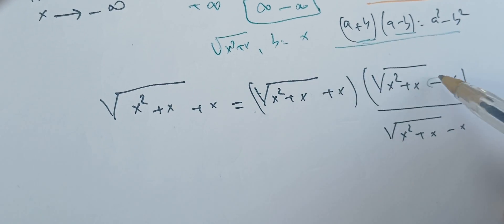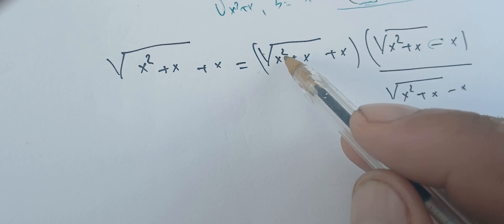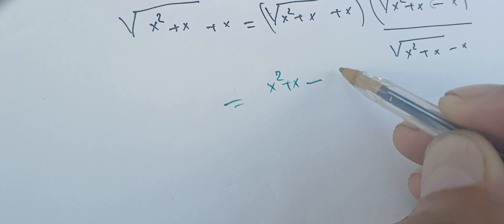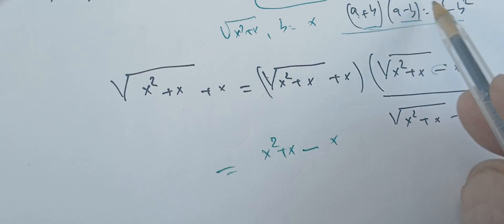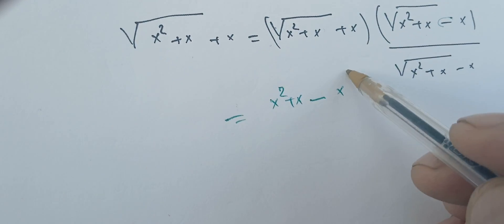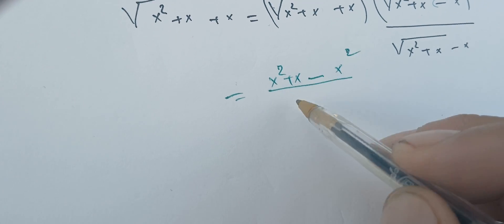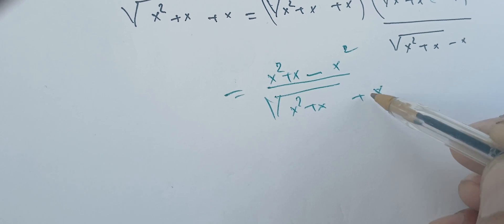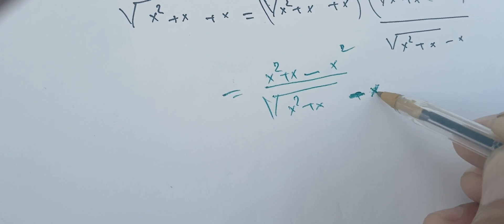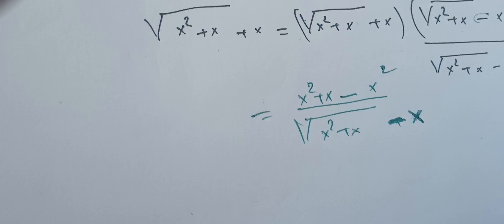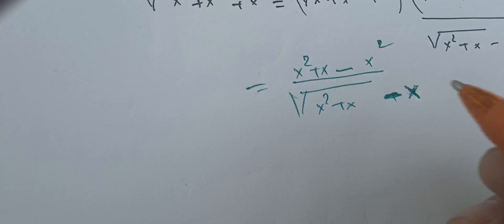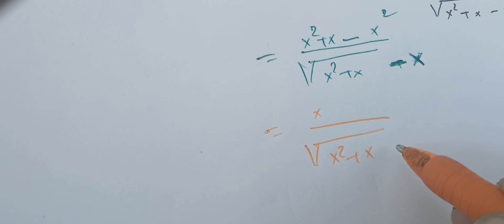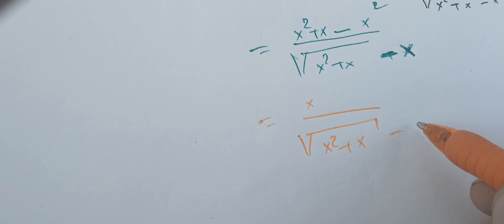This is an important rule to use here. Once we do that, we get x squared plus x minus x squared, which is our a² minus b², over the square root of x squared plus x, minus x. Simplifying, we get x over the square root of x squared plus x, minus x.